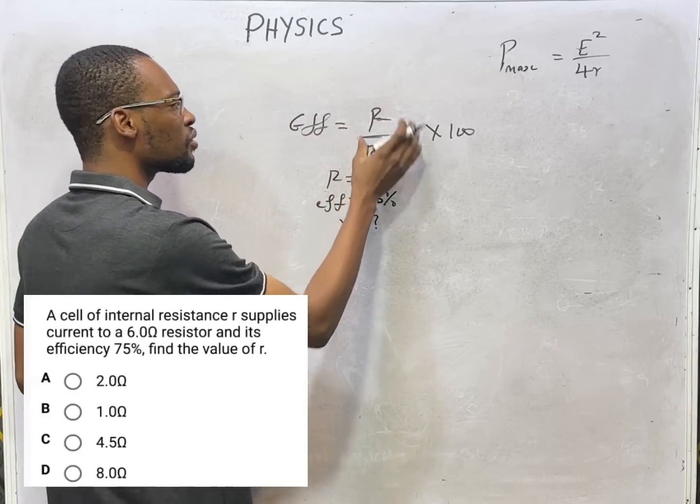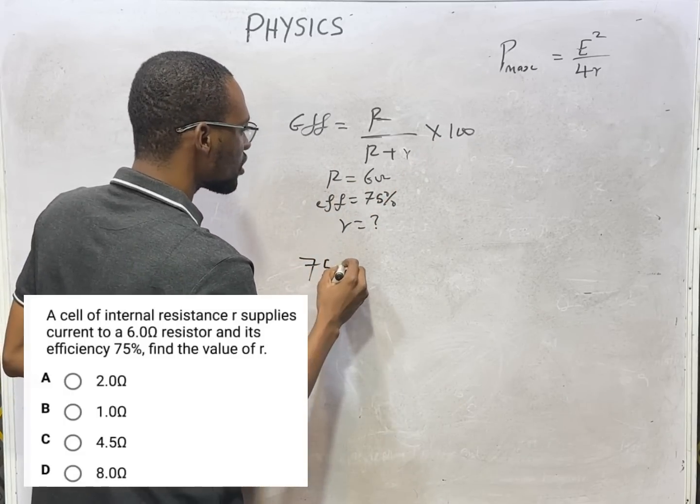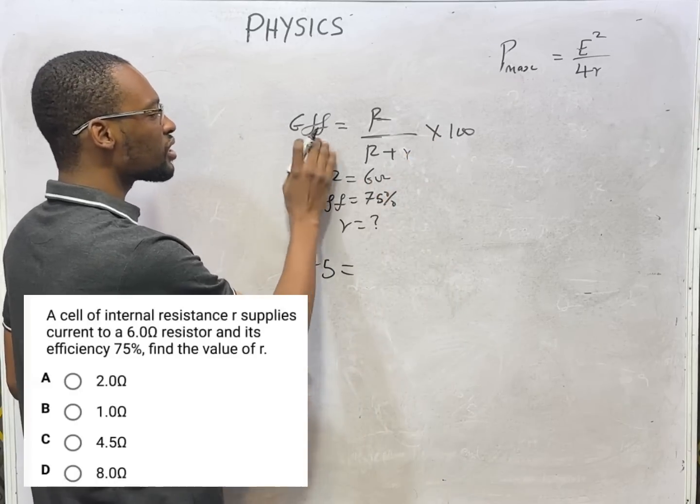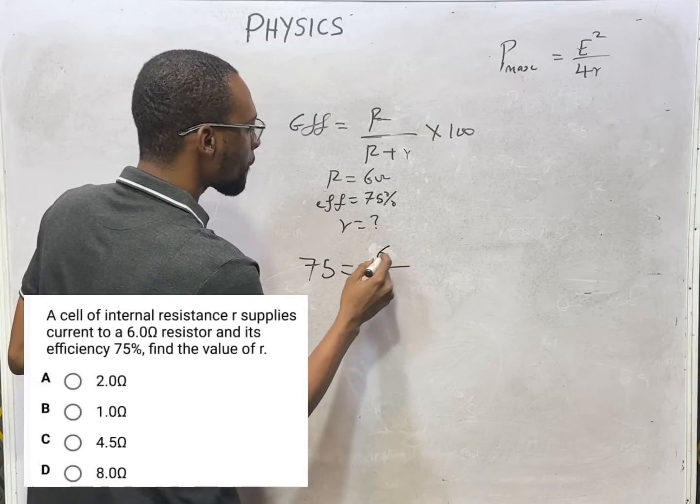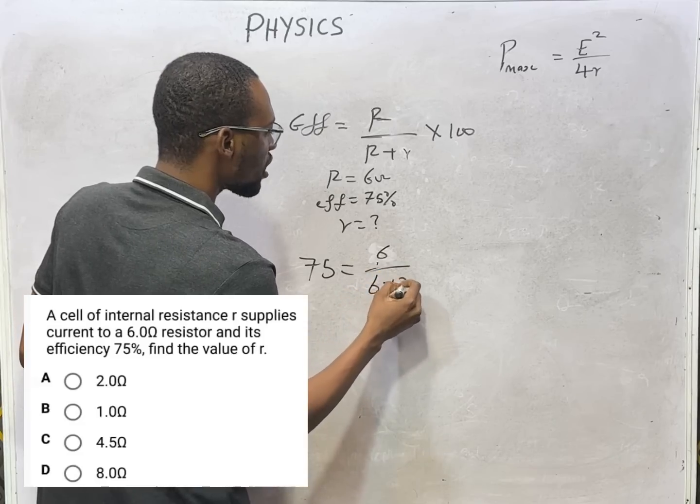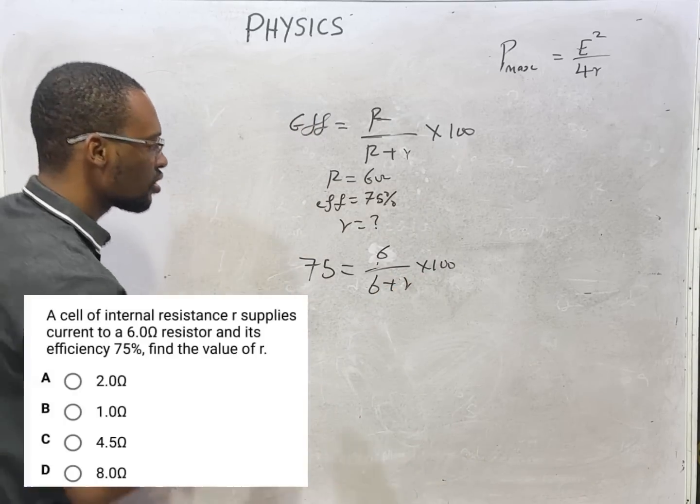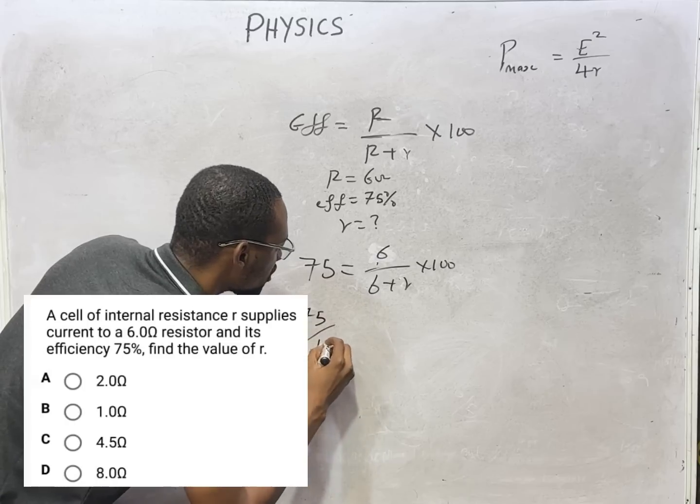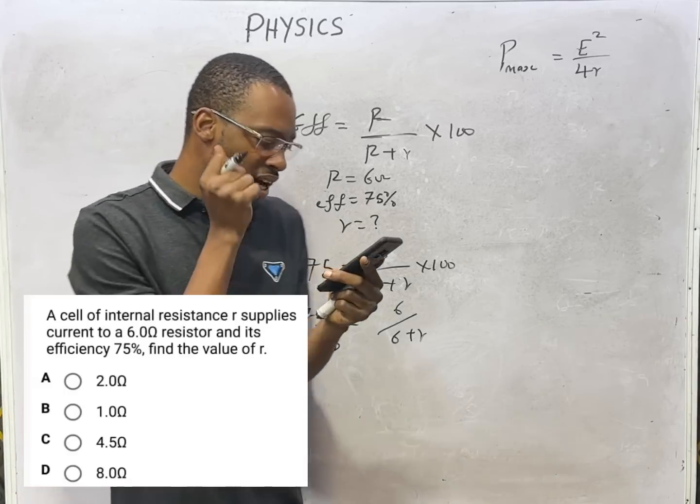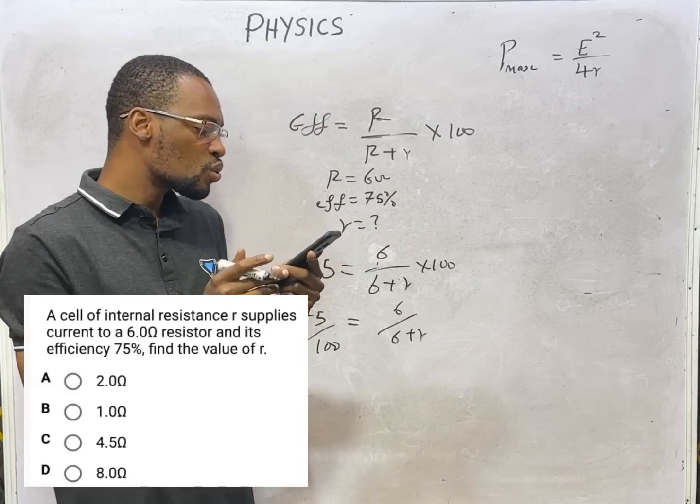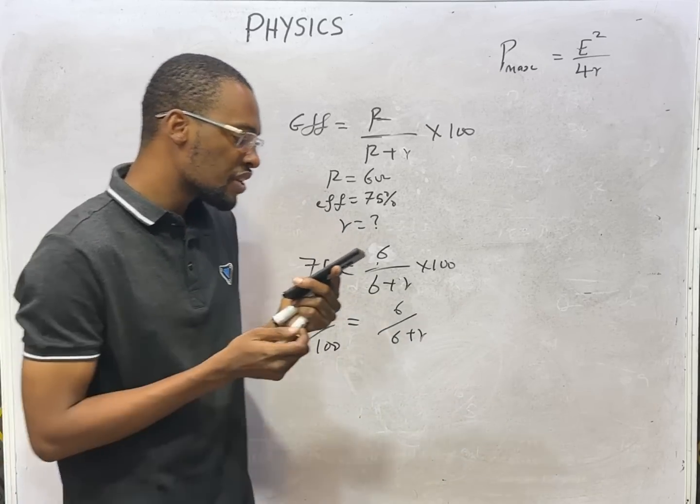Because efficiency is R/(R+r) × 100, so efficiency is 75. So 75 = 6/(6+r) × 100. If you solve this correctly, 75/100 = 6/(6+r). When you cross multiply and make r subject of formula you should be able to get 2 ohms. The answer is 2 ohms.